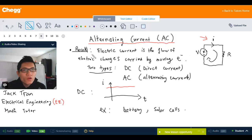So recall from the previous video, electric current is the flow of electric charge that's carried by moving electrons.